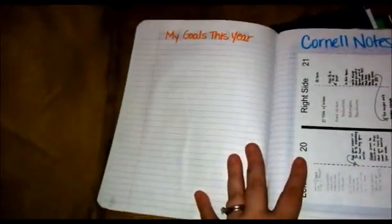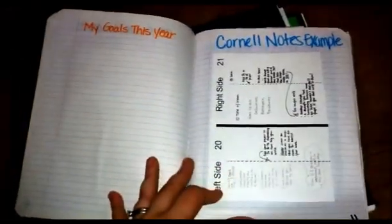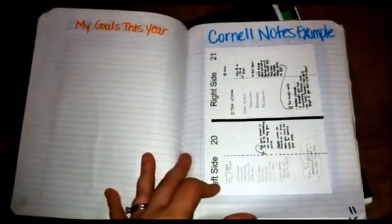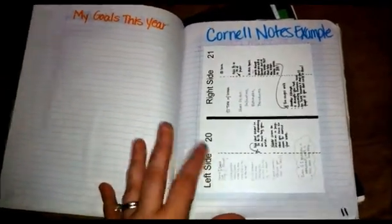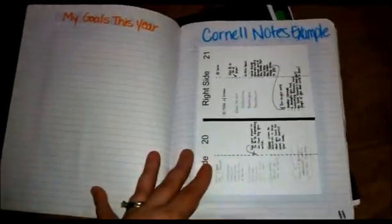They filled out a page that said their goals. I gave them an example of Cornell notes. And then we never used it. I did not do the left side, right side, it doesn't work for me. So that is something I'm omitting this year.